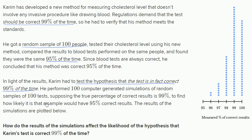Each of those samples has 100 people in them. Supposing the true percentage of correct results is 99%, the goal is to find how likely it is that a sample would have 95% correct results. The results of the simulations are plotted below.